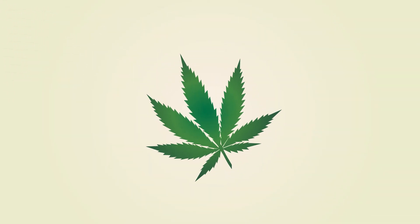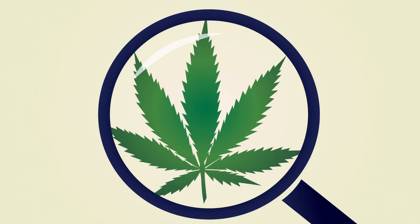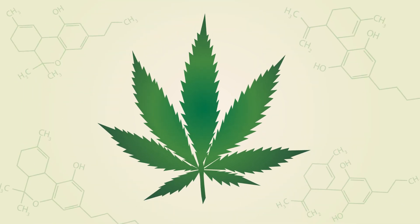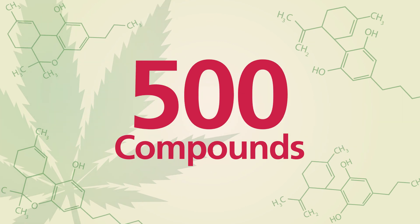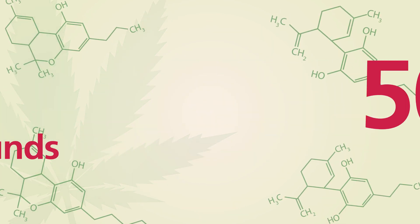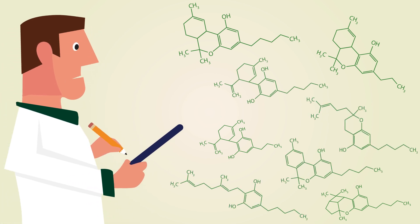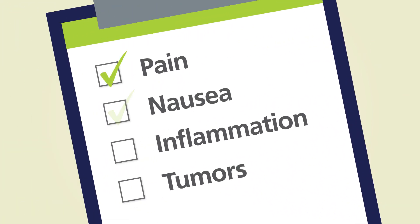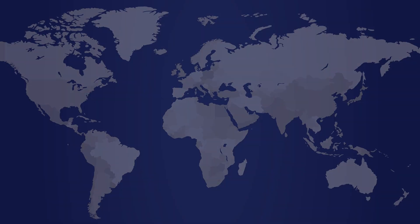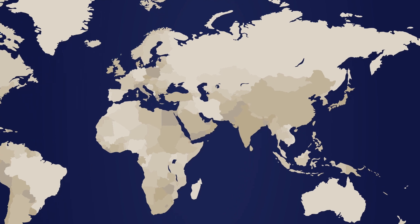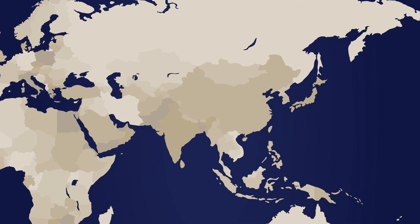It's no wonder that so many people are starting to take a closer look at cannabis. It really is an amazing plant. Cannabis contains more than 500 compounds that can be found nowhere else in nature. Many of these substances are believed to have astonishing curative properties, easing pain, nausea, inflammation and even reducing tumors in cancer patients. In fact, cannabis has been used by many cultures around the world for a very long time.